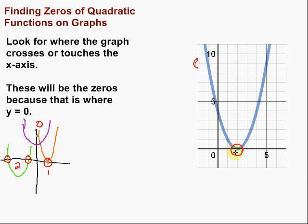And it's located right here, which is at 2. So how many zeros do we have in this particular case? We have one, and it's at 2.